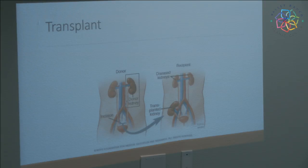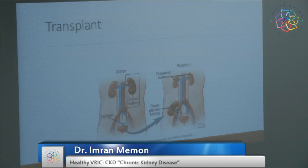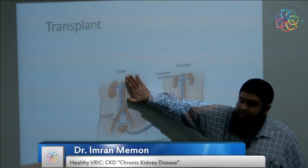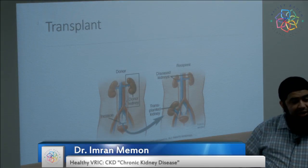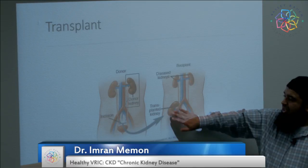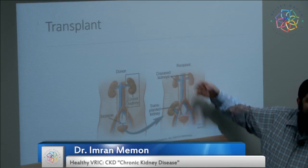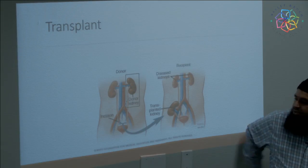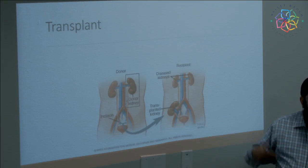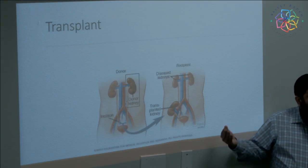A kidney transplant means transplanting an organ from a healthy donor to a person with chronic kidney disease. We take the donor kidney and implant it in the lower abdomen — not where the original kidney was — so we can access it easily if problems occur. It's a big operation, more complicated to place in the back, so we put it in the front lower area. Once you have a kidney transplant and everything goes well, you can potentially live a normal life.